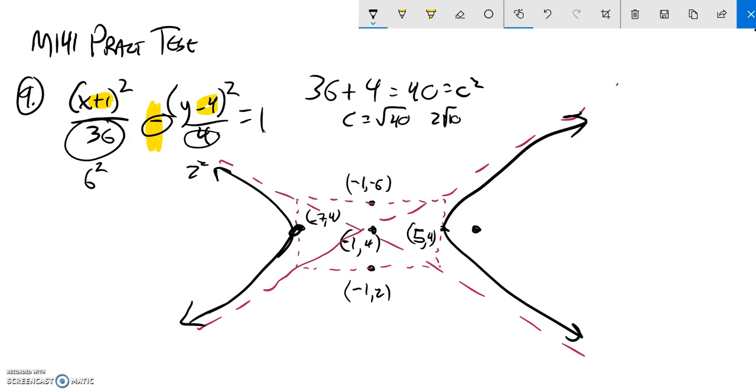So that means from here I'm going to go negative 1 plus 2 root 10, 4. And then in this direction I'm going to go out negative 1 minus 2 root 10, 4. There's my sketch.